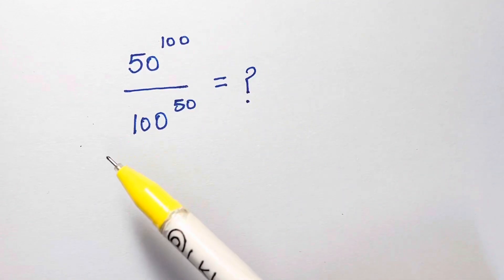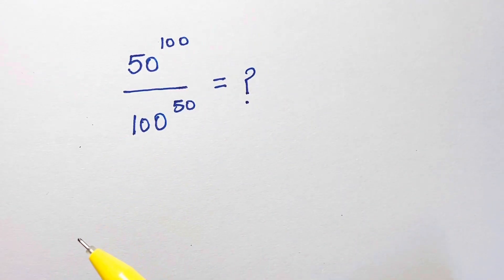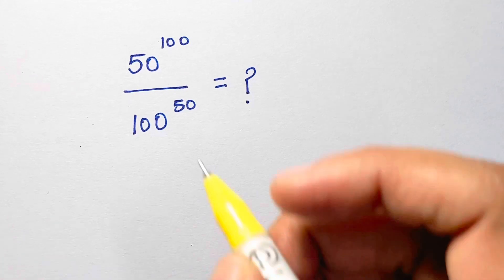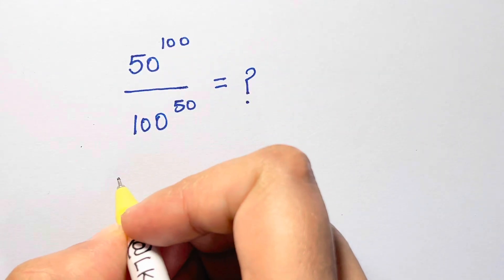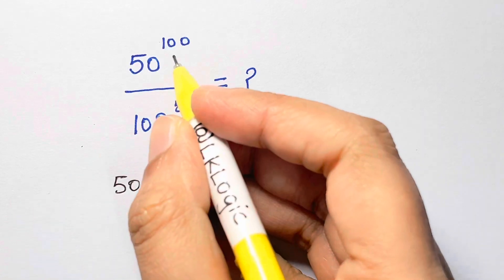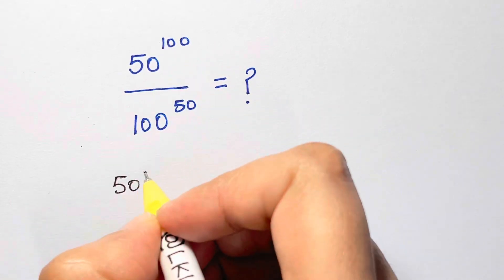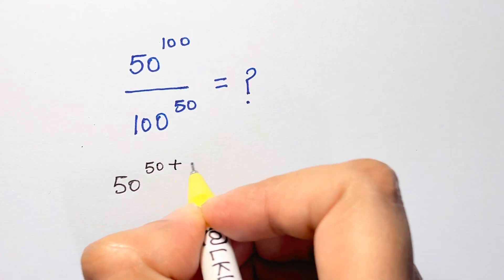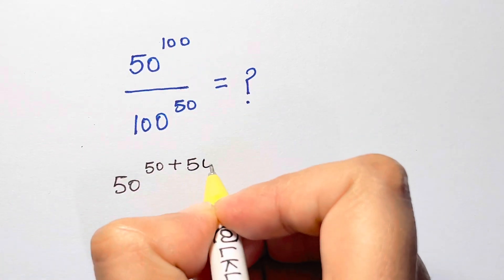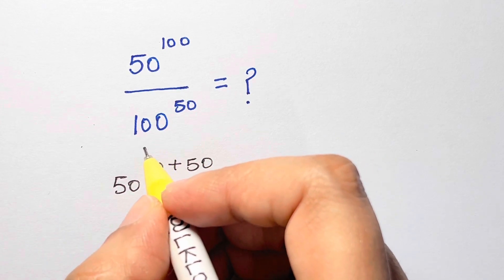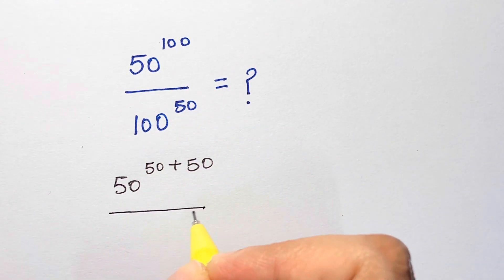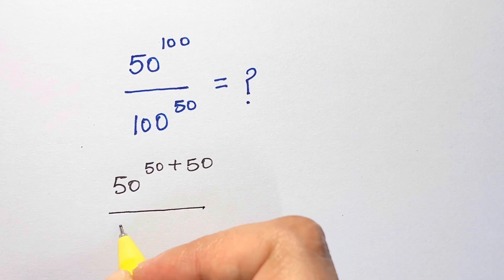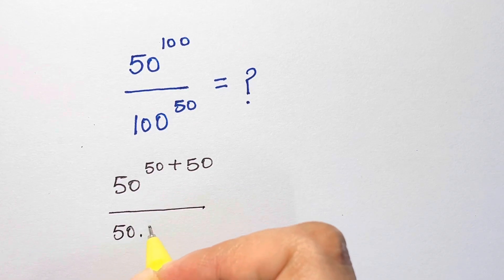Hi guys, here I have a nice power division problem for you all. So how would you solve this? First of all, we have this — let us write it down: 50^100. You can split it as 50 plus 50, and then 100 to the power of 50. 100 can be written as 50 times 2.